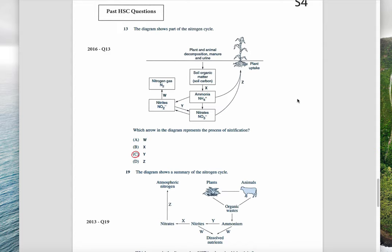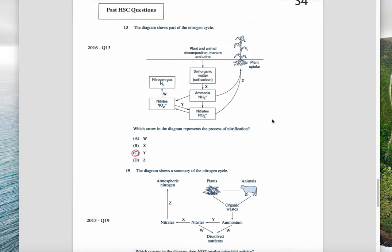The only questions asked on this topic in the HSC so far have been on the nitrogen cycle, though a carbon cycle question may come soon. Here's a 2016 HSC question showing the nitrogen cycle with nitrates, ammonia, soil carbon, nitrogen gas, nitrites, etc. They could arrange the cycle in various ways, so you need to know it well. The question asks: which arrow represents the process of nitrification? Nitrification is the process of turning ammonia to ammonium through nitrites to nitrates — so that's the correct answer. This is denitrification and this is absorption into the plant.